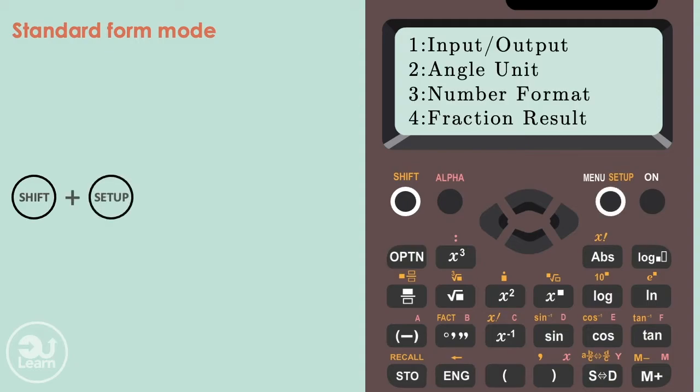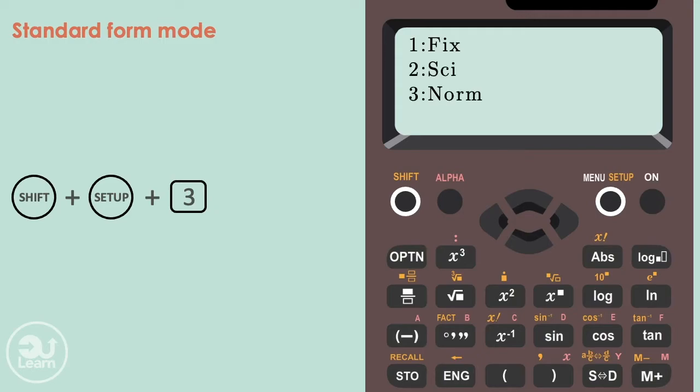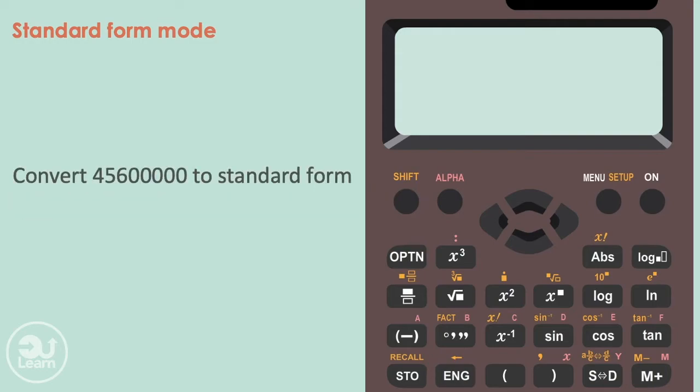Press the number that corresponds to number format, for me it's 3. Then press the number that corresponds to SCI, the number is 2 for me and finally press 0. Now we're all set. Let's say we want to convert 45,600,000 to standard form.